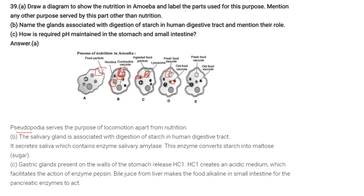Name the glands associated with digestion of starch in the human digestive tract. The salivary gland secretes saliva containing salivary amylase, which converts starch into maltose (sugar). How is the required pH maintained in the stomach and small intestine? Gastric glands release HCl creating an acidic medium of pH 2 for pepsin to act. Bile juice from the liver makes the food alkaline in the small intestine for pancreatic enzymes to act.